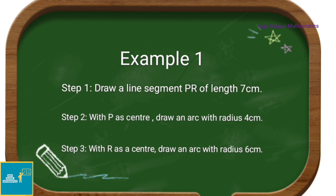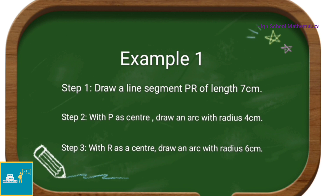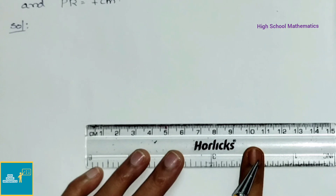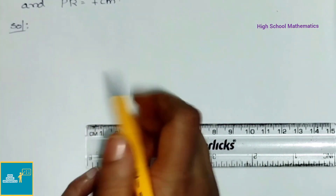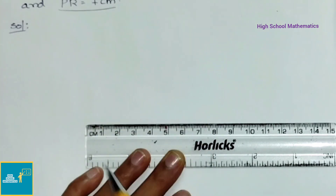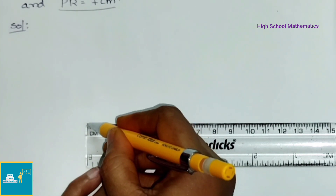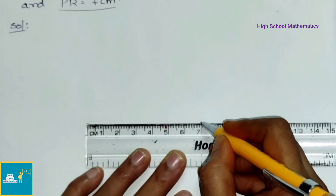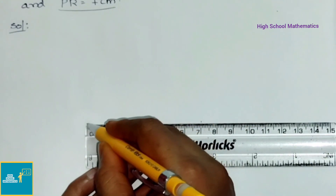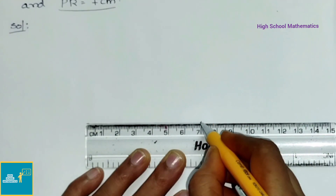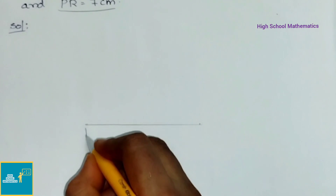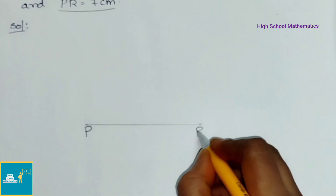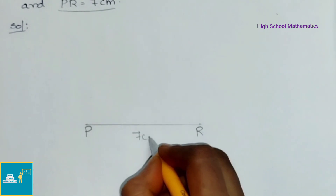Step 2: with P as center, draw an arc with radius 4 cm. Step 3: with R as center, draw an arc with radius 6 cm. Let us draw the line segment PR equal to 7 cm. Now we shall mark P and R that is 7 cm apart and join them, marking it as PR with length 7 cm.